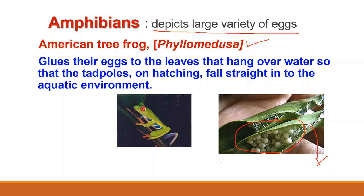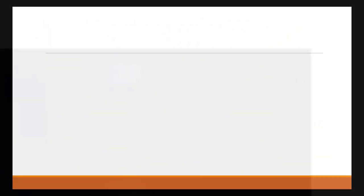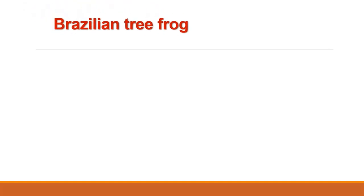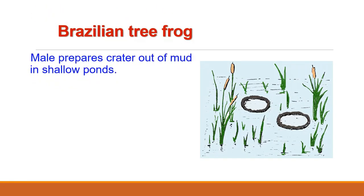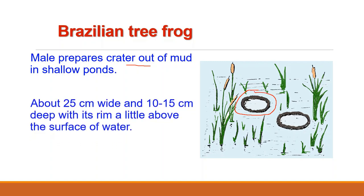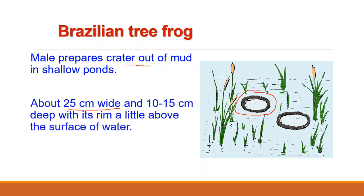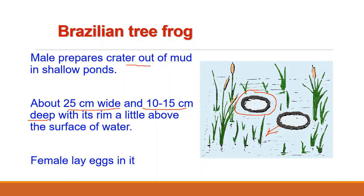An interesting instance of nest building is found in the Brazilian tree frog, the zoological name of which is Hyla faber, where the male prepares a crater out of mud which is about 25 cm wide and 10 to 15 cm deep, with its rim a little above the surface of water. They prepare such nests in shallow ponds and then the female lays eggs in it.